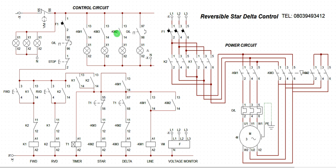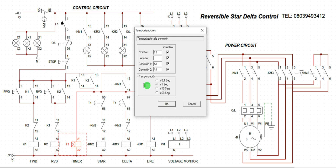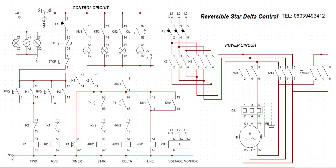K2 is for star operation, then K3 is for delta operation, K1 here is for mains. Let's simulate. Let's go through the operation. Before then, let's change the timing, let's make it three seconds. All right, let's leave it two seconds.